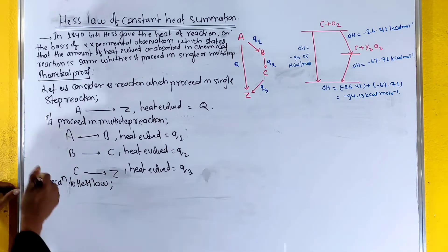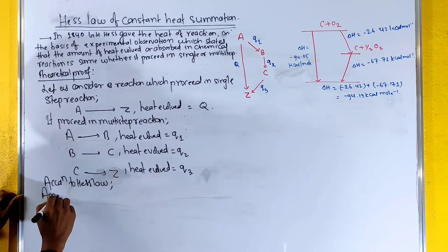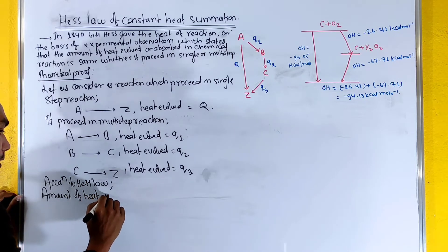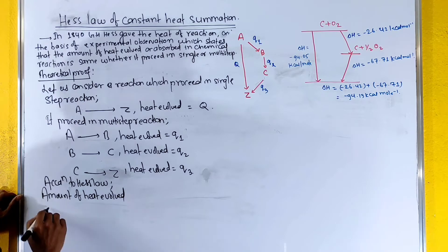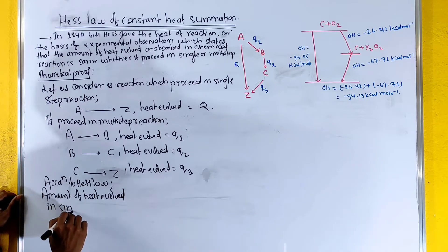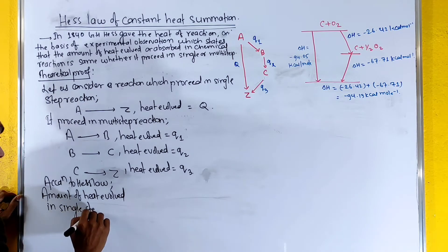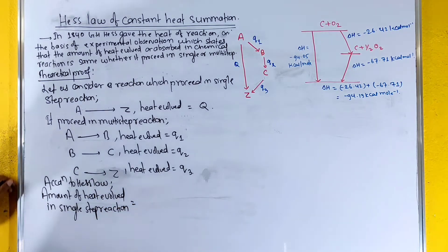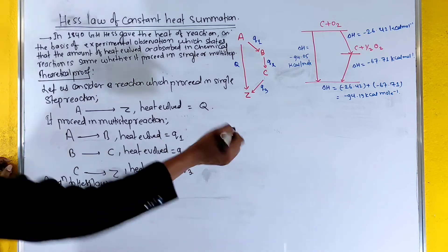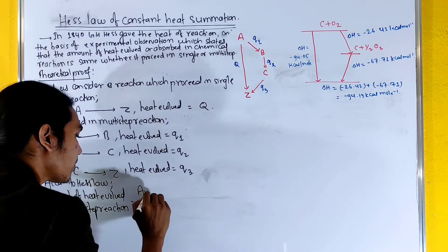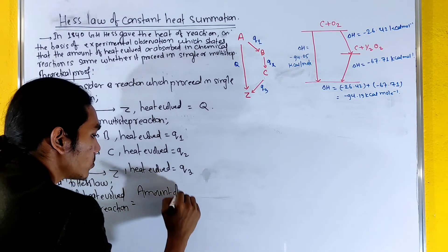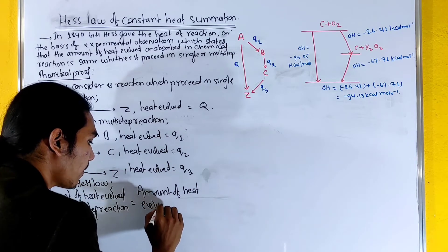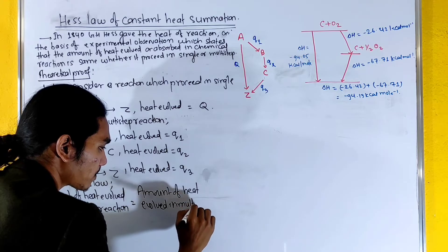According to Hess's Law, the amount of heat evolved in a single step reaction equals the amount of heat evolved in a multi-step reaction.